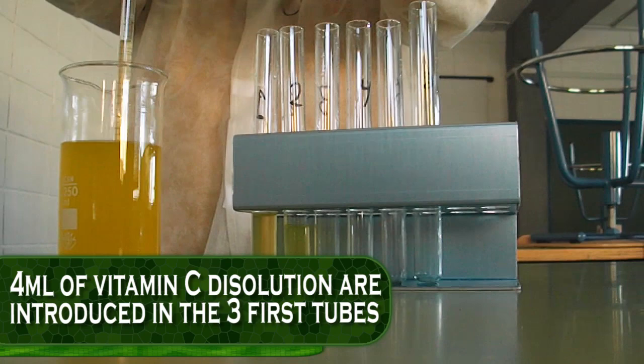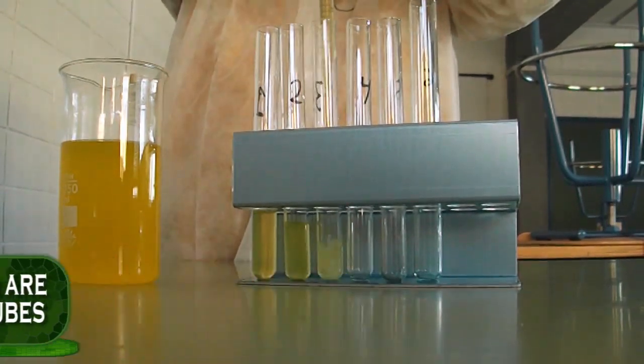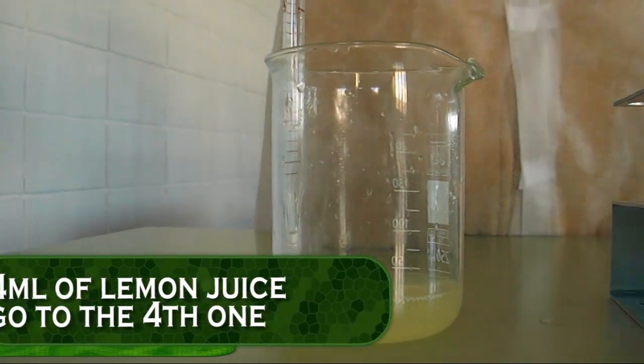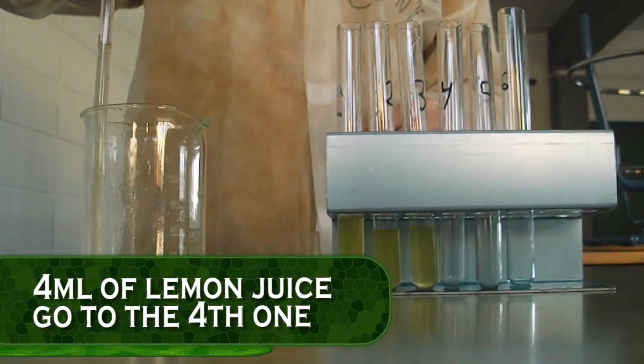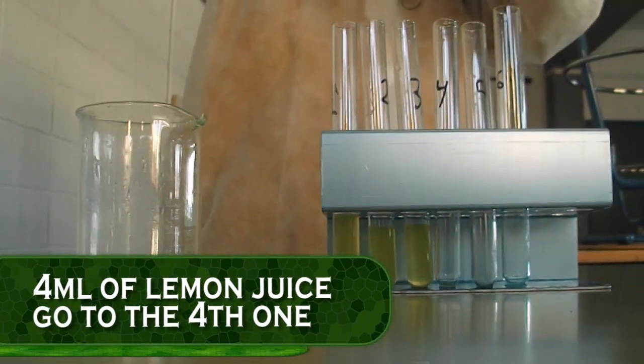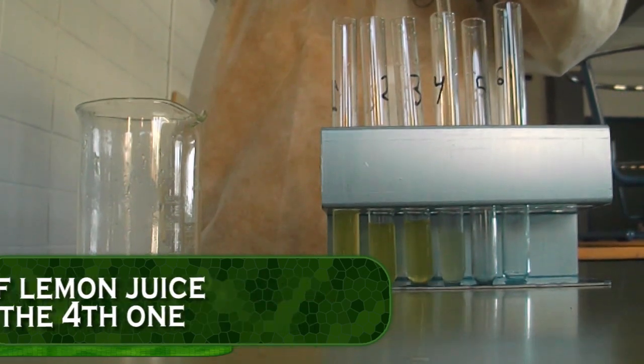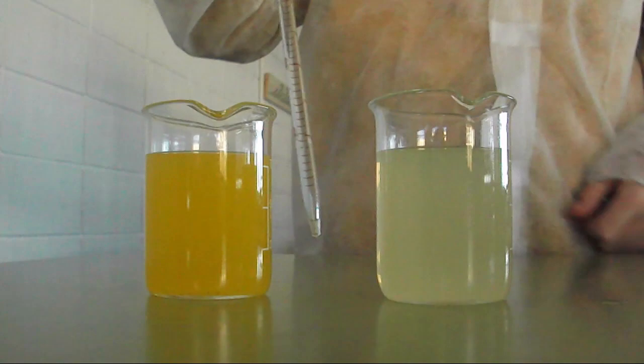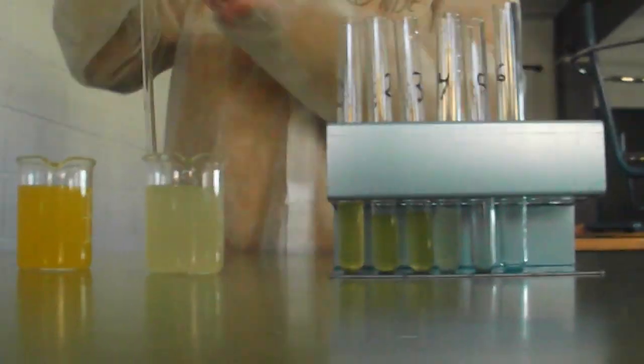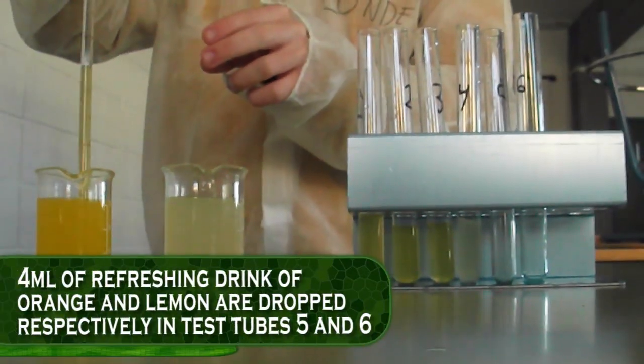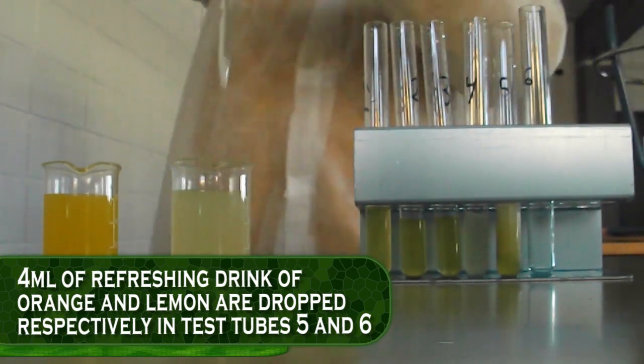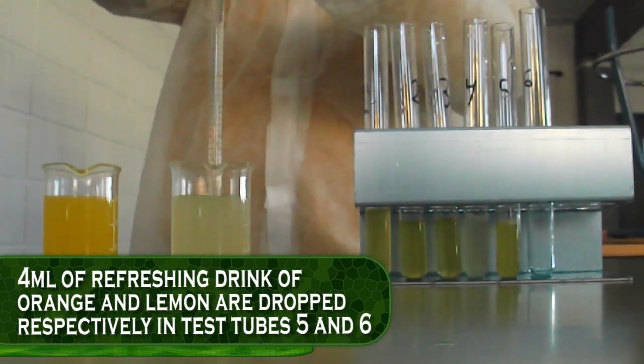4 ml of lemon juice go to the fourth one. 4 ml of refreshing drink of orange and lemon are dropped respectively in tubes 5 and 6.